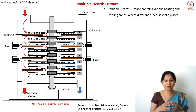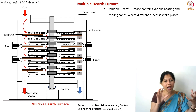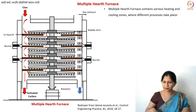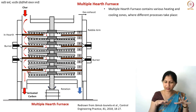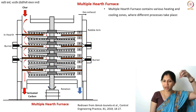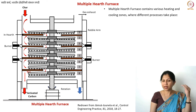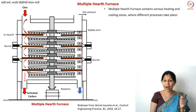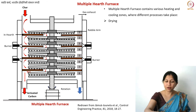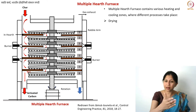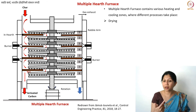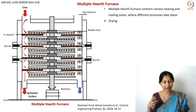In the multiple hearth furnace, there is one shaft in the center that is rotating. You have disc-like structures, and you pour your feed — your char — from the top. It goes onto stage one, where what are known as rabble arms rotate and spread the material on the furnace. After that it goes to stage two, then three, and so on. Different processes take place at different stages.